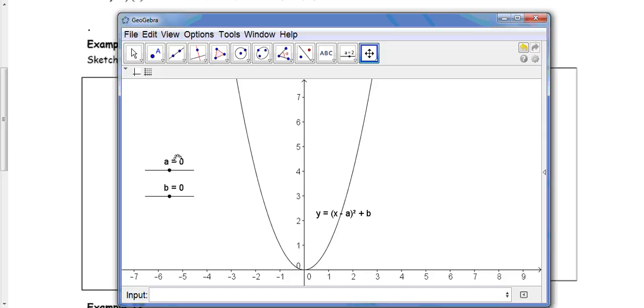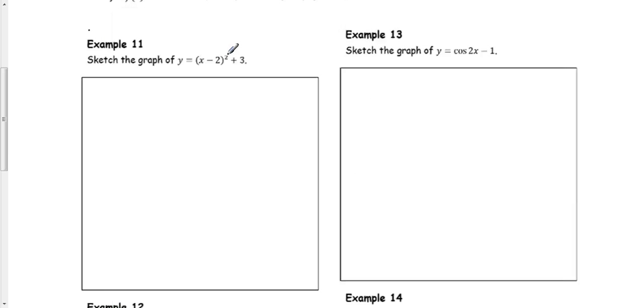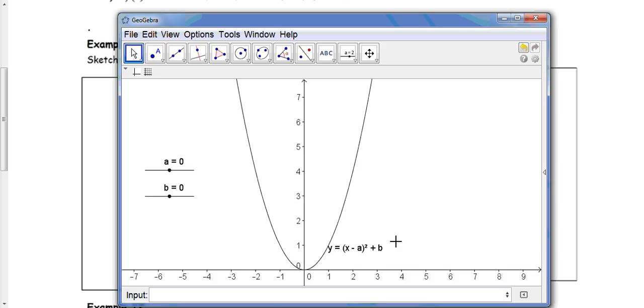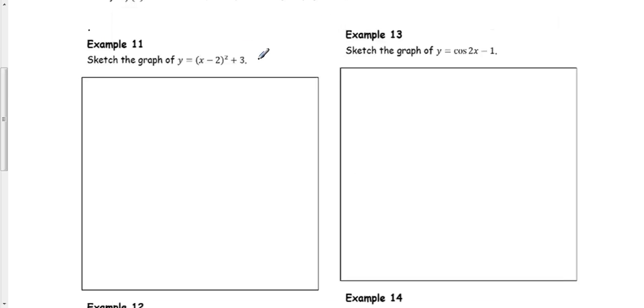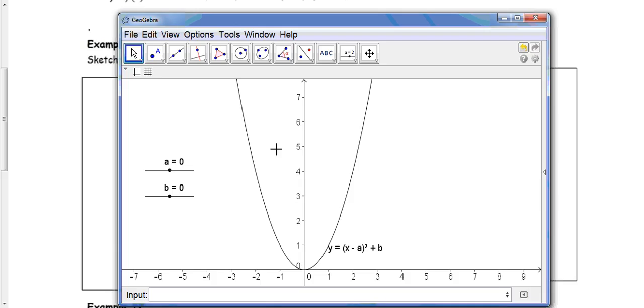And what I'm going to do is increase the value for a inside the brackets here. So we have x minus a in the brackets. I'm going to increase a up to 2 and b on the outside of the brackets. I'm going to increase it to 3 and see what happens to the graph.